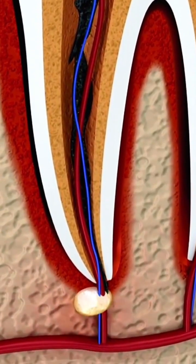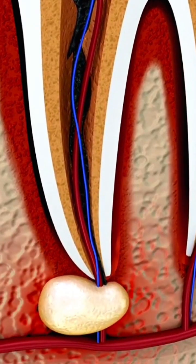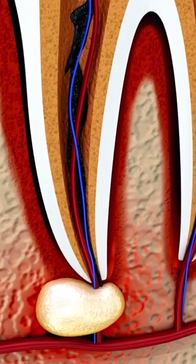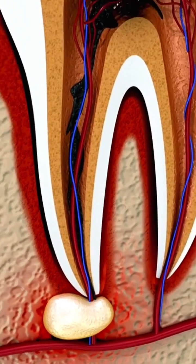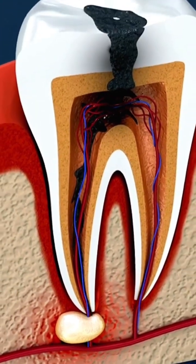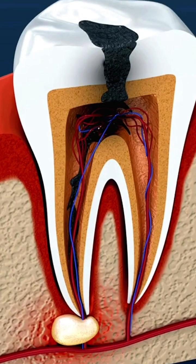This can happen because of a cracked or chipped tooth, a broken tooth root, damage to the pulp — even without damage to the outside of the tooth — repeated dental procedures, or tooth decay.